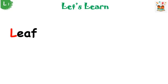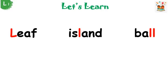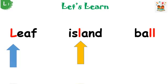Let's listen carefully to find the sound of the letter L. Let's read these words: leaf, island, ball. Each word has the letter L, but the letter L doesn't sit in the same place. Look carefully at the first word, leaf — the letter L is at the beginning. Look at the second word, island — the letter L is in the middle. And look at the third word, ball — the letter L is at the end.